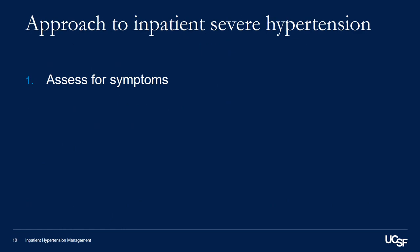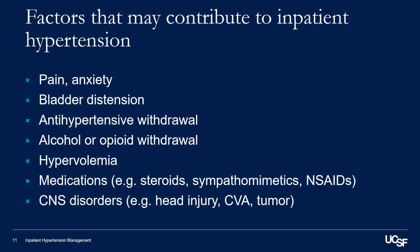If you've excluded hypertensive emergency, the next step is to assess for and treat any potential factors that could be contributing to elevated blood pressure. Some common contributing factors in the inpatient setting are pain, anxiety, bladder distension, antihypertensive withdrawal, alcohol or opioid withdrawal, hypervolemia, certain medications, and CNS disorders.